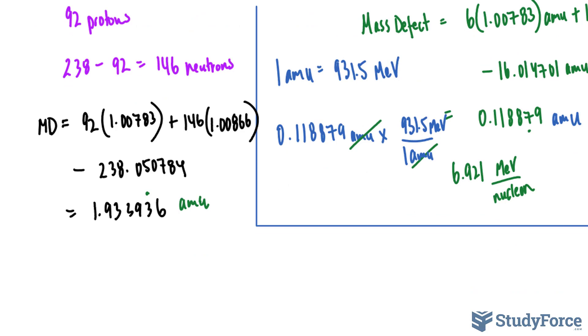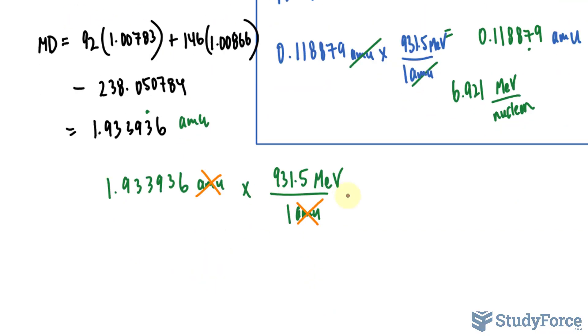And using the mass defect, I'll convert this value into mega electron volts. And the conversion ratio is provided right here from the previous question. So let me convert this for you. 1.933936. The way I like to convert is using this technique where I multiply it now by 1 AMU at the bottom and 931.5 mega electron volts at the top. This technique is called dimensional analysis.